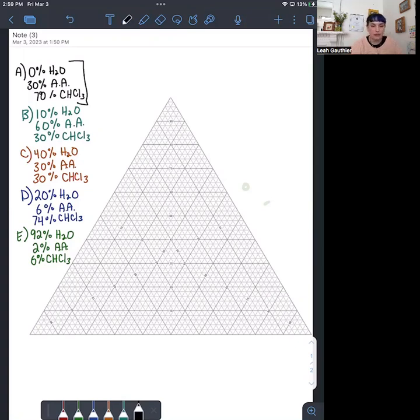As part of the report, you need to plot that data on a ternary phase diagram, and that diagram looks like what we have here. So it's a triangle, and essentially is a graph that has three different axes.